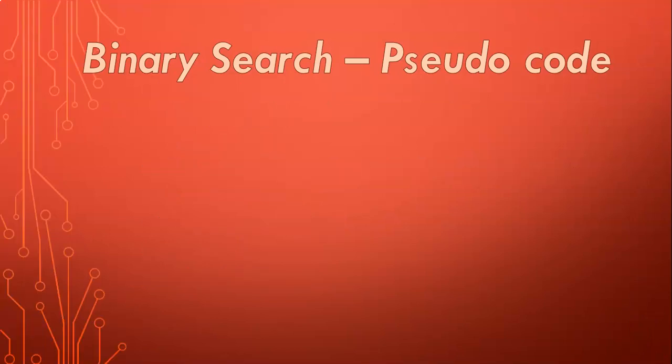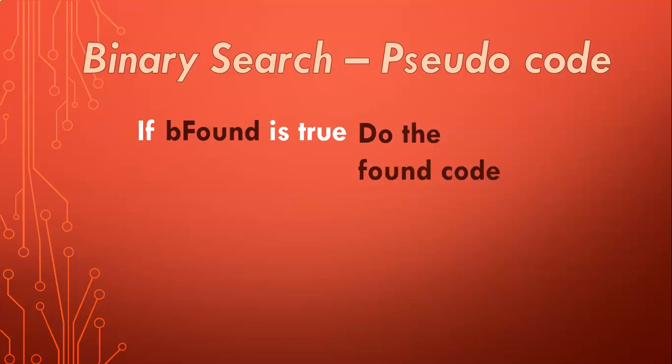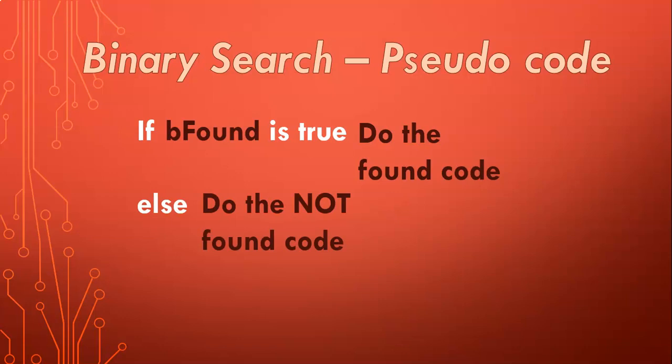Once the loop has finished, we check the bFound variable — just like in the linear search. If bFound is true, that means at some point during the loop we found what we're looking for, so we run the code for that event. However, if bFound is still false — if we got through the entire loop and it never changed to true — then we run the code for when we do not find what we're looking for.